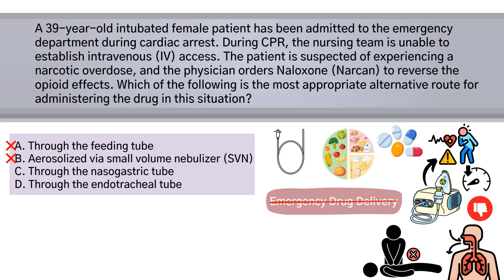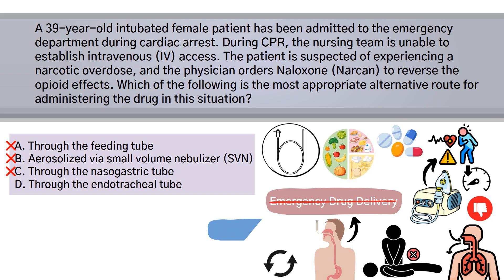Option C is incorrect because, like a feeding tube, an NG tube is not appropriate for emergency drug delivery, especially when rapid reversal of opioid effects is needed.